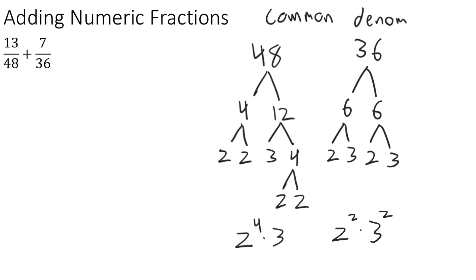This gives us the tools to build our common denominator. The common denominator has to have each of the individual elements that we see — 2's and 3's. In terms of how many of each we need, we need the highest power that appears between the two fractions. For the 2's, we have 4 here and 2 here, so we need four 2's. For the 3's, we have one 3 here and two 3's here, so we need two 3's in our common denominator.